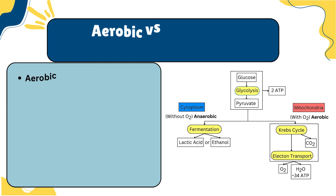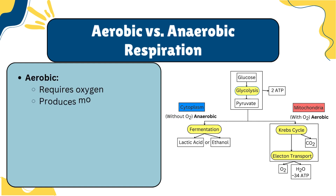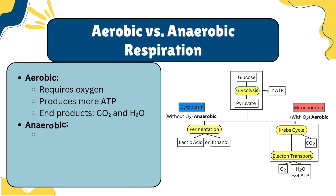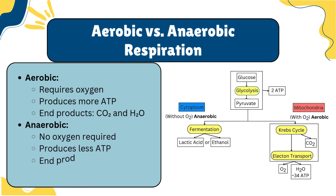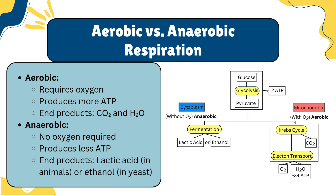Now, let's compare aerobic and anaerobic respiration. Aerobic respiration requires oxygen, leading to higher ATP production and yielding carbon dioxide and water as byproducts. In contrast, anaerobic respiration does not need oxygen, resulting in lower ATP production and producing either lactic acid in animals or ethanol in yeast.